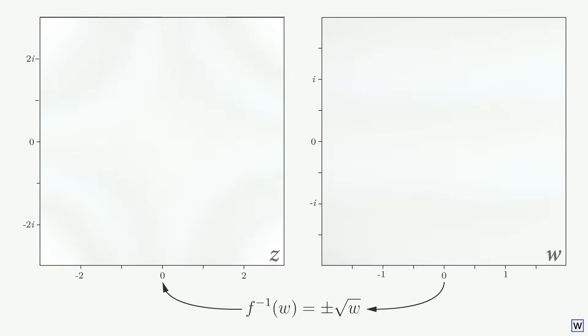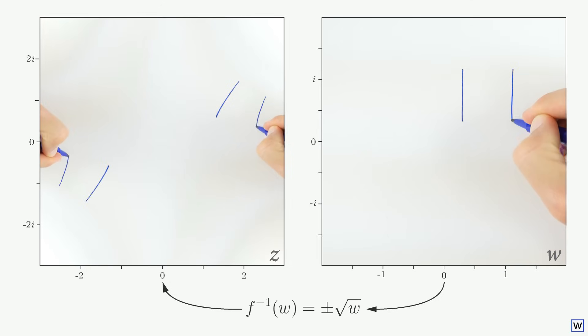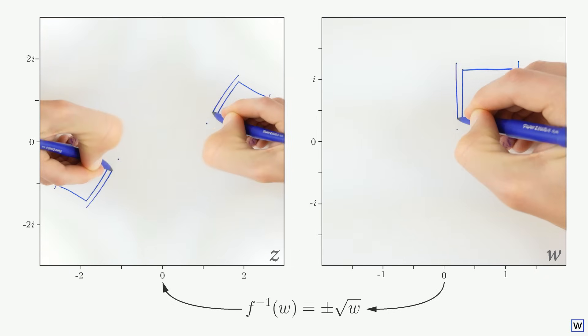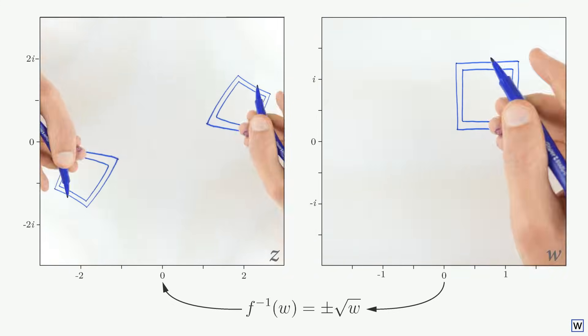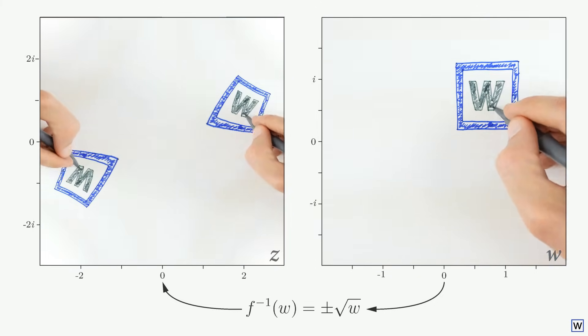Let's experiment with our multi-function. When we draw shapes on our w-plane, our shapes are duplicated and shrunk down onto our z-plane. Our shapes are copied because each point in w is mapped to two points in z, and shrunk because the square root function takes the square root of the magnitude of our w values and divides each angle by 2.